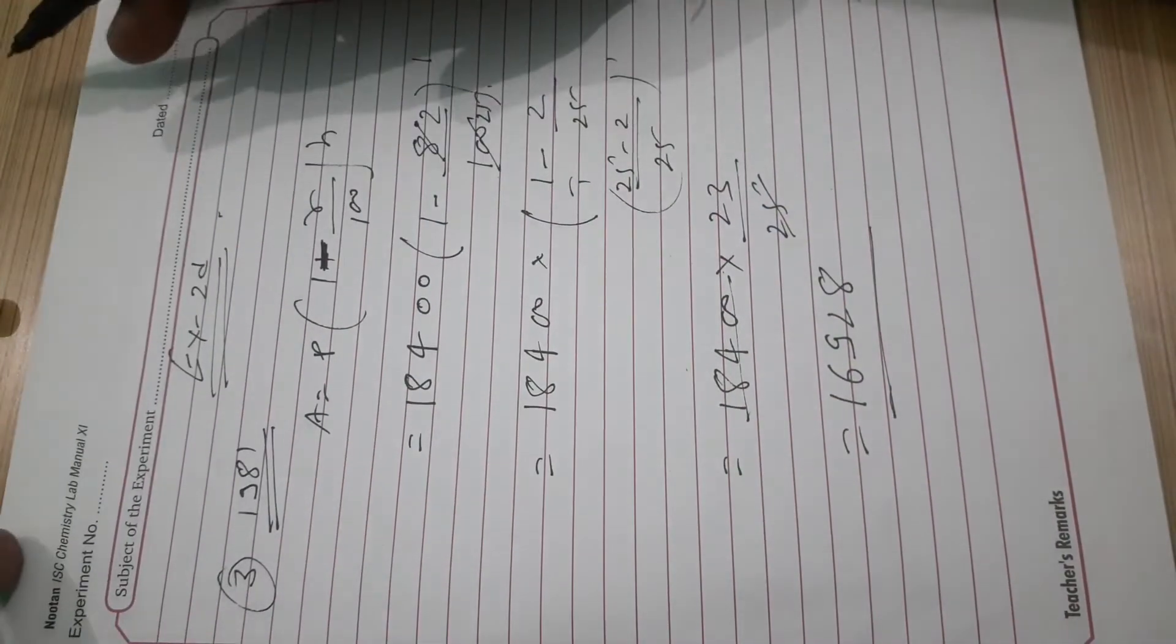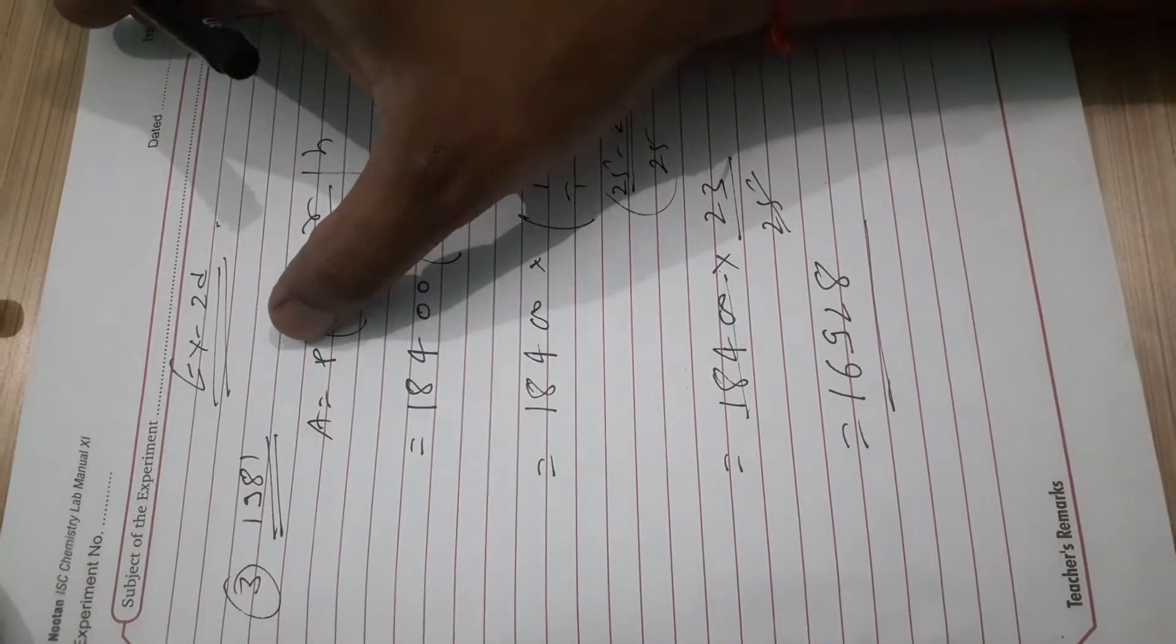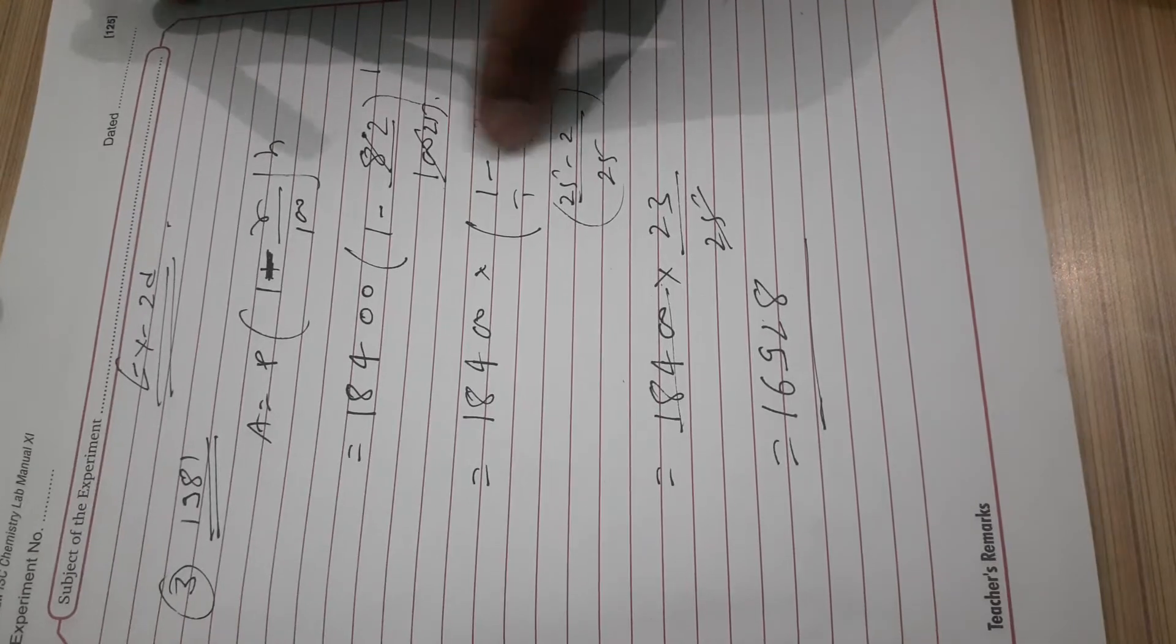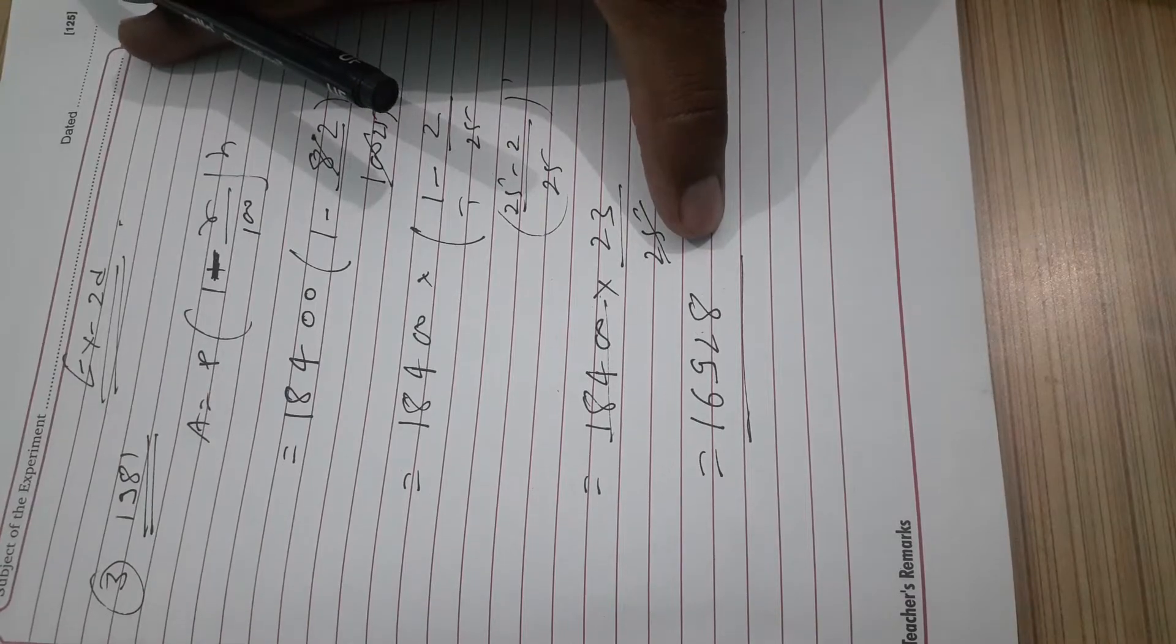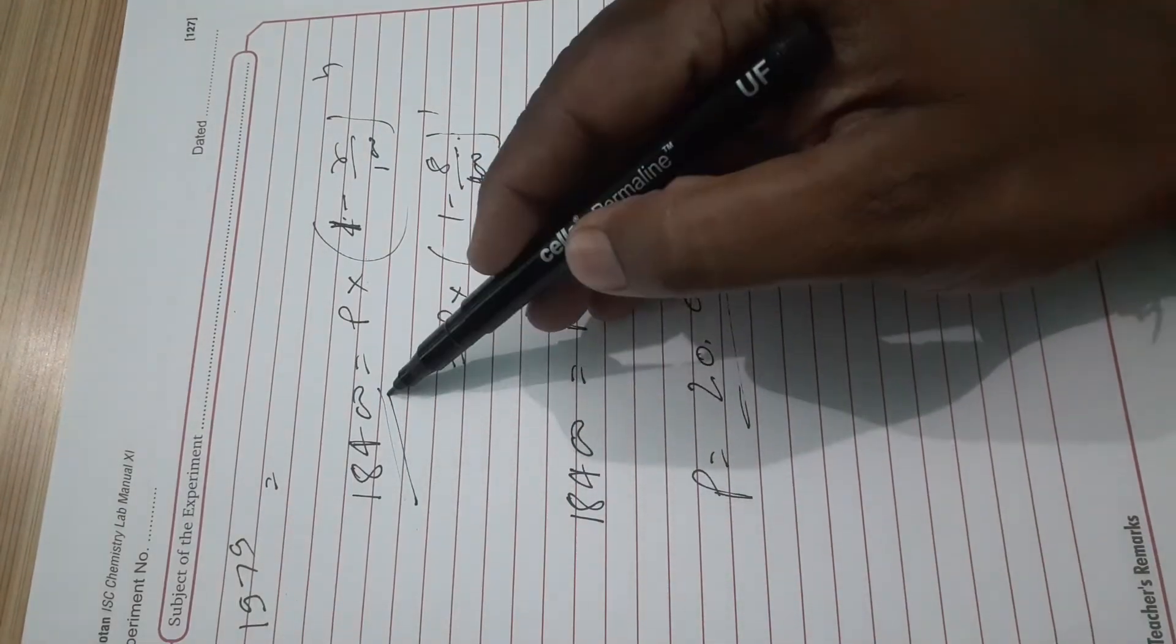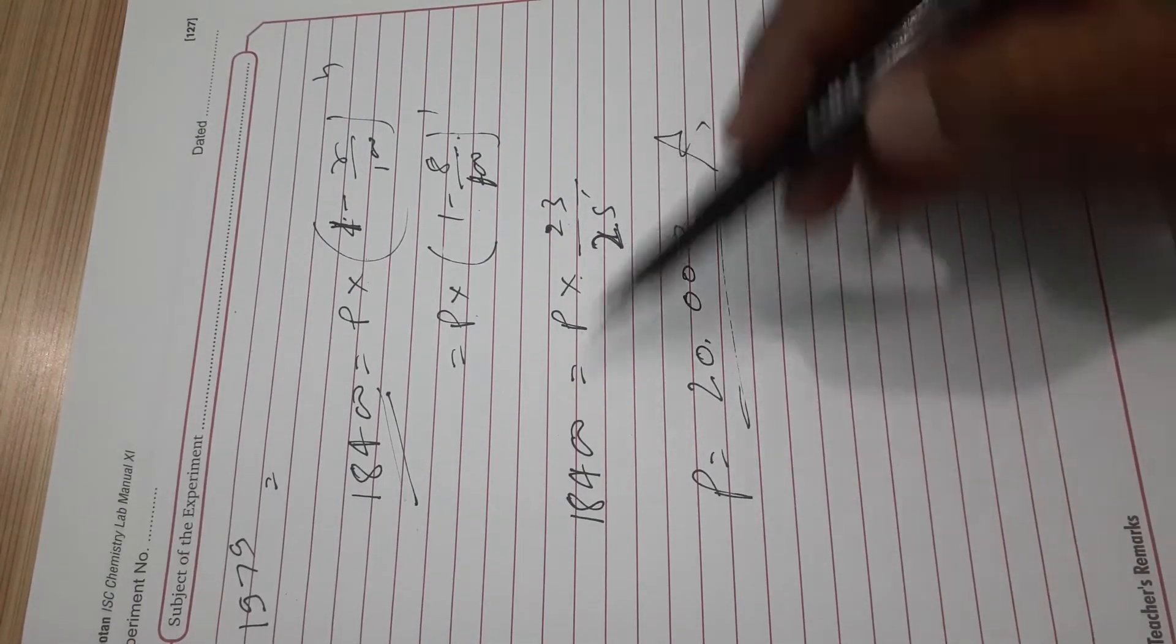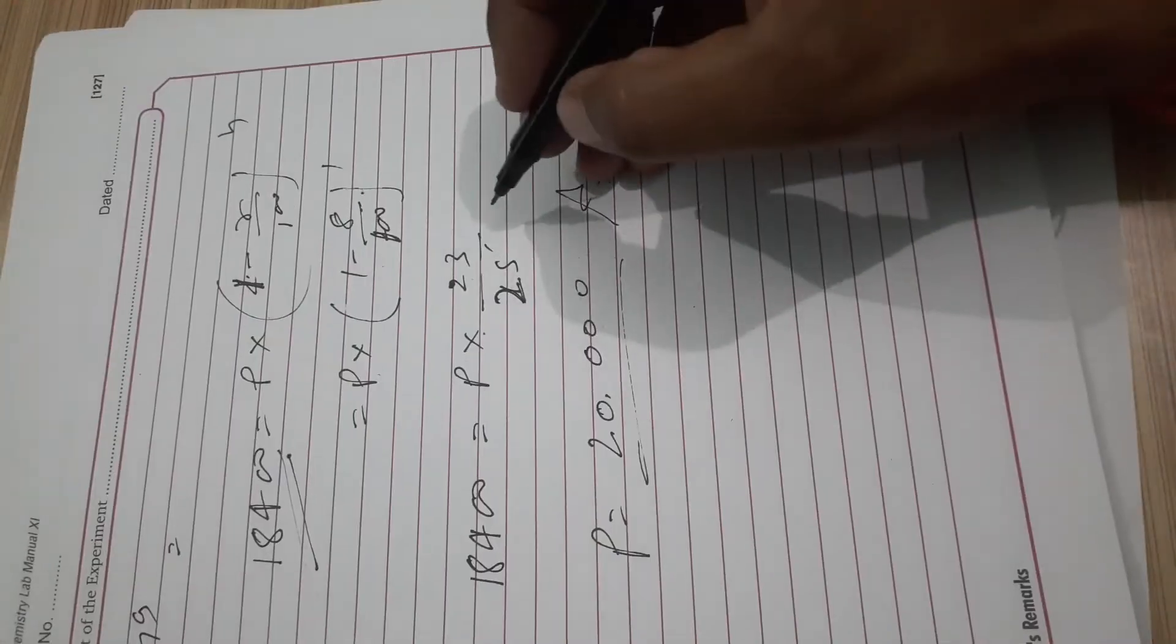For 1981: A equals P times (1 minus R/100) to the power n. That's P times (1 minus 8/100). After cancellation it will be 23 upon 25. For 1979 value, we find the principal: same formula, 1 minus 8 upon 100, which is 23 upon 25. Cross multiplication: 18,400 times 25 upon 23, which comes to 20,000.